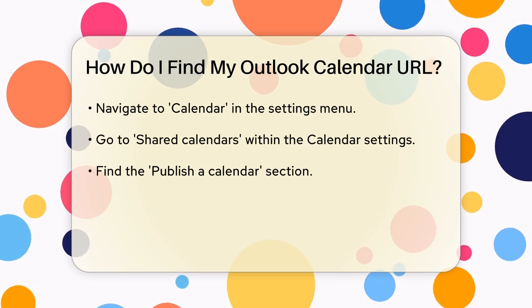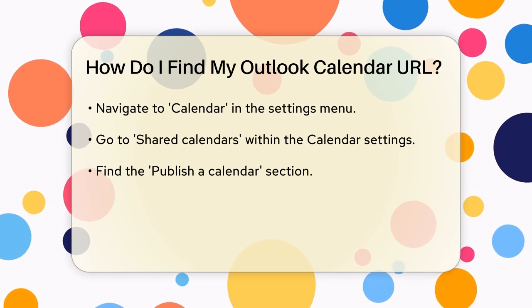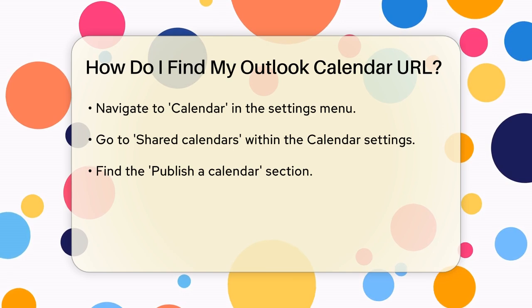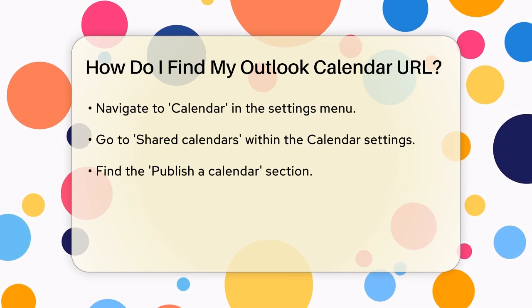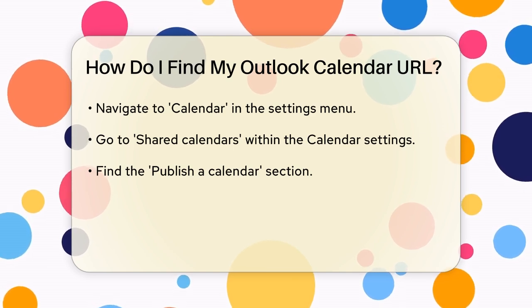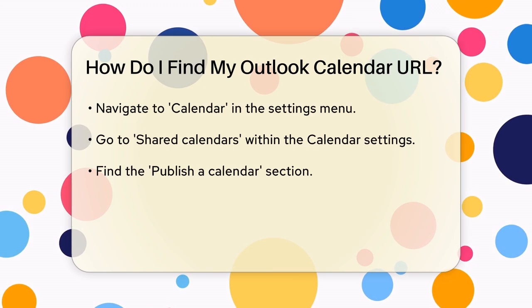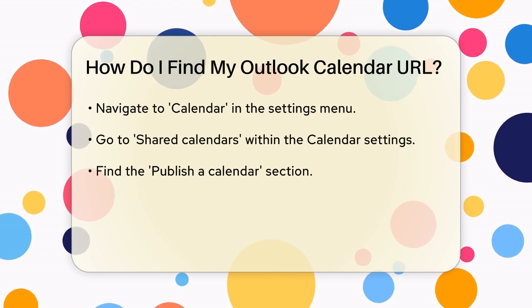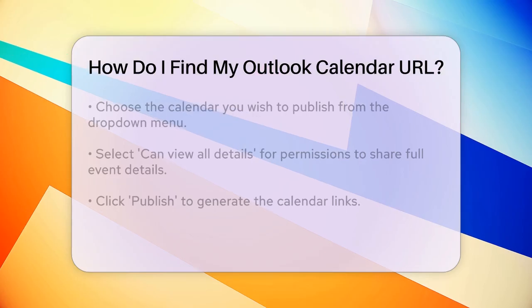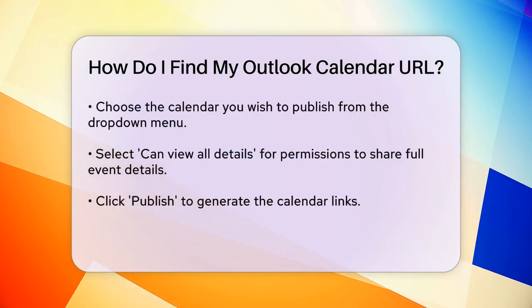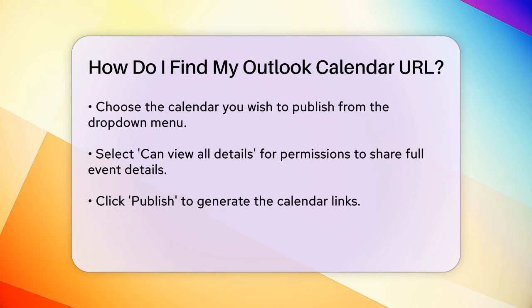From the drop-down menu, select the calendar you want to publish — this could be your primary calendar or any other calendar you've created. Next, in the Select Permissions drop-down menu, choose Can View All Details if you want to share all the details of your events. After selecting the permissions, click Publish.